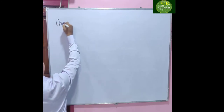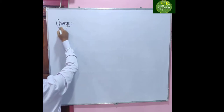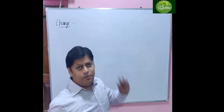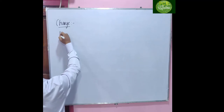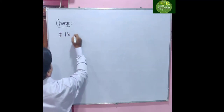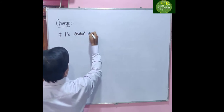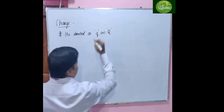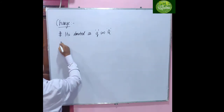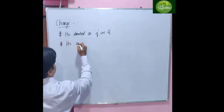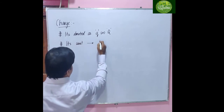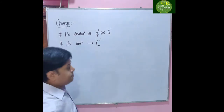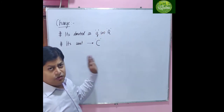Let us see what is charge. It is denoted as Q, or capital Q. Its unit is Coulomb, indicated by C.